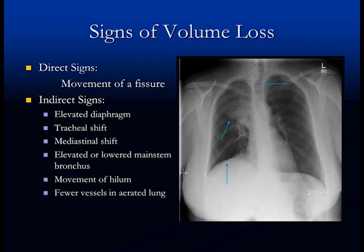The mainstem bronchus may move up or down depending on which part of the lung is collapsed — if the upper lobe is collapsed, the hilum and mainstem bronchus move up; if the lower lobe is collapsed, they move down. Lastly, there are fewer vessels in the aerated lung, so you should be able to see a blacker lung adjacent to the area of collapse than there is normally.